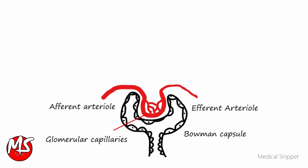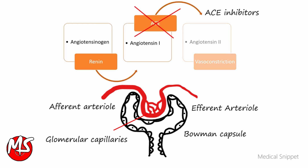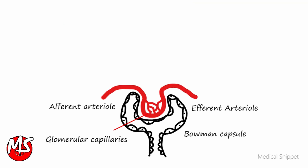This maintains the high intraglomerular capillary pressure in spite of decreased renal perfusion, thus glomerular filtration rate is maintained. If ACE inhibitors are given, they block this compensatory mechanism and cause acute renal failure in patients with bilateral renal artery stenosis. Therefore, ACE inhibitors are contraindicated in these patients.